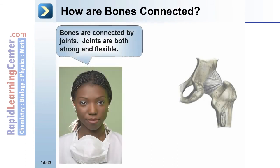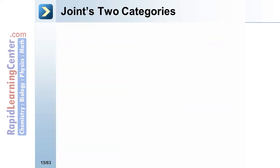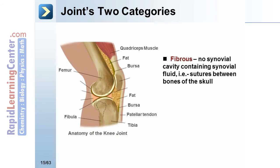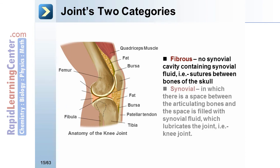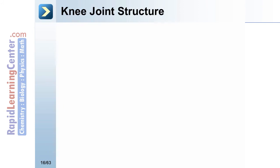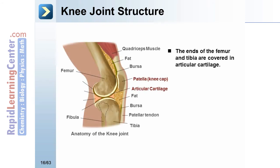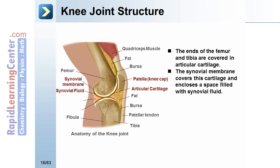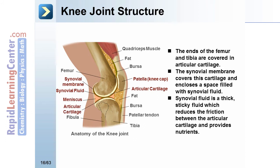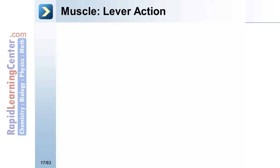Bones are connected by joints, which are both strong and flexible. Joints fall into two categories: fibrous, meaning there is no synovial cavity containing synovial fluid, for instance sutures between the bones of the skull; and synovial joints, in which there is a space between the articulating bones filled with synovial fluid which lubricates the joint, for instance the knee joint. The ends of the femur and tibia are covered in articular cartilage; the synovial membrane covers this cartilage and encloses a space filled with synovial fluid, a thick sticky fluid that reduces friction and provides nutrients.